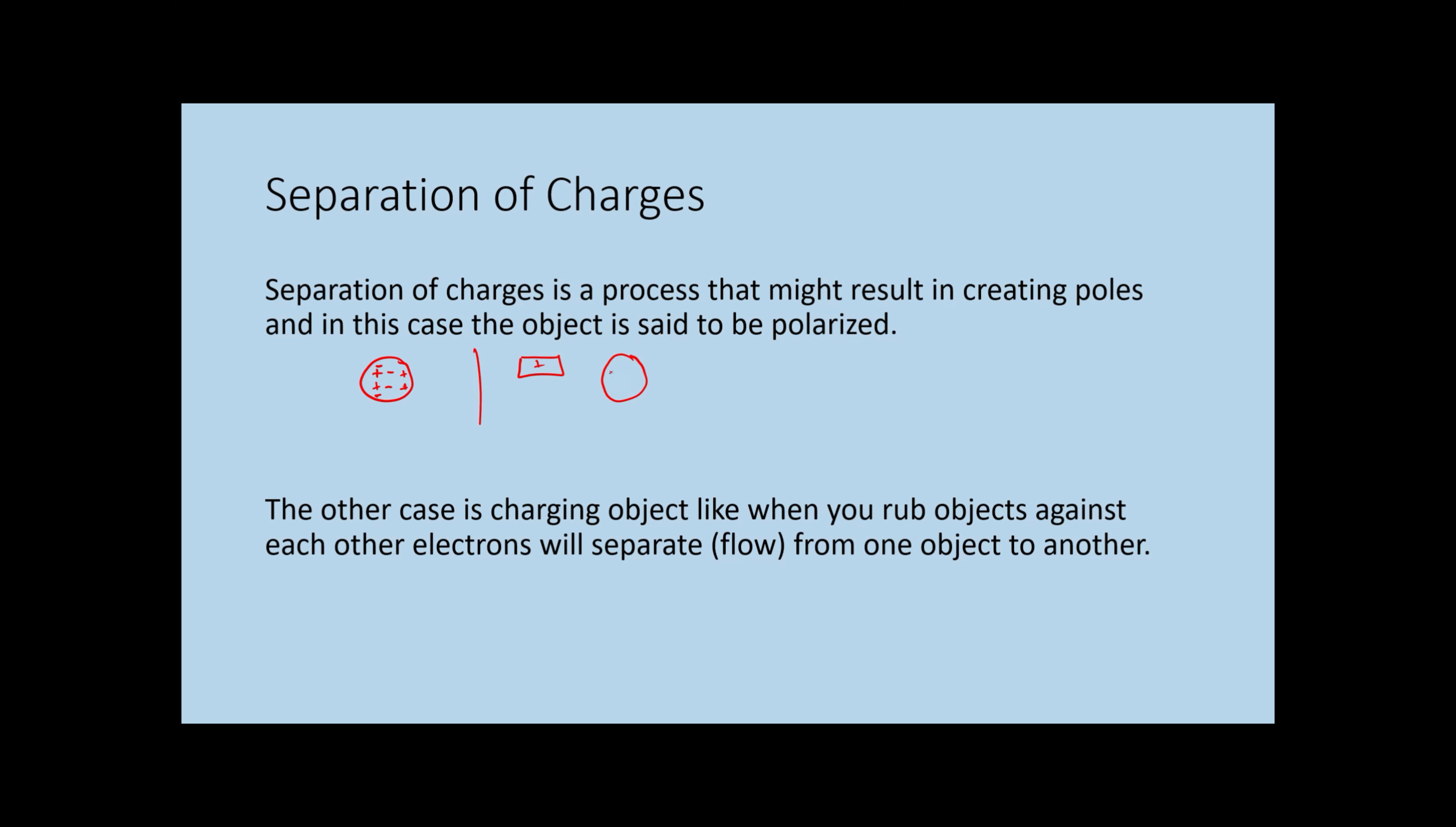What happens is the following: as it is brought close to the object, it will repel the positive charge and attract the negative charge. So this will be negative and this will be positive. This is called polarization or forming poles.